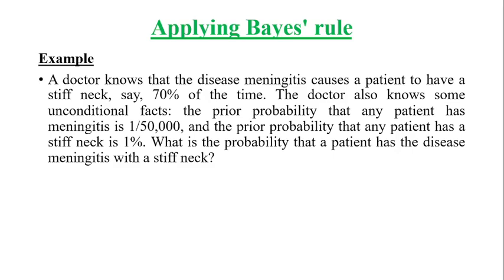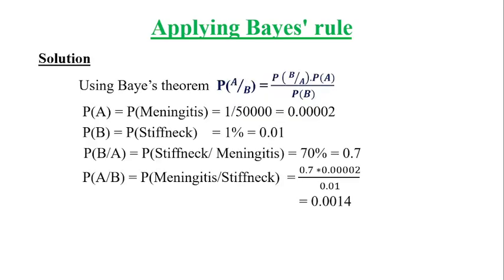Let us see an example. A doctor knows that the disease meningitis causes a patient to have a stiff neck 70% of the time. The prior probability that any patient has meningitis is 1 by 50,000, and the prior probability that any patient has a stiff neck is 1%. What is the probability that a patient has meningitis given a stiff neck? Applying Bayes' rule: P of meningitis is 0.0002, P of stiff neck is 0.01, and P of stiff neck given meningitis is 0.7. We calculate P of meningitis given stiff neck and get the value 0.0014.